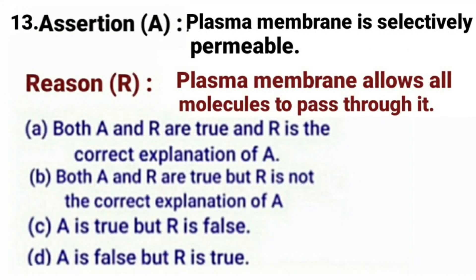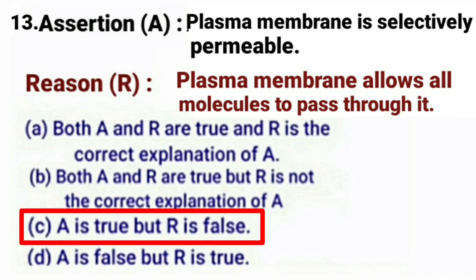Next question. Assertion: Plasma membrane is selectively permeable. Reason: Plasma membrane allows all molecules to pass through it. Plasma membrane is selectively permeable — this statement is true. Plasma membrane allows all molecules to pass through it — this statement is false, because the plasma membrane allows only some materials, not all materials, to pass through it. So the correct answer is option C: assertion is true, but reason is false.